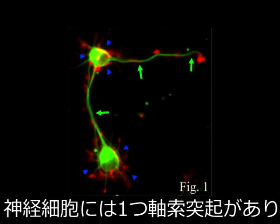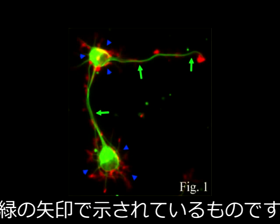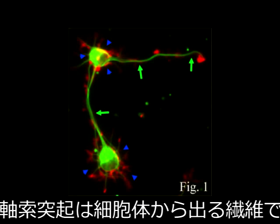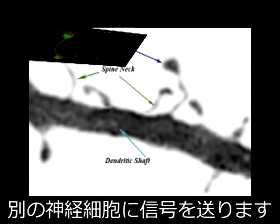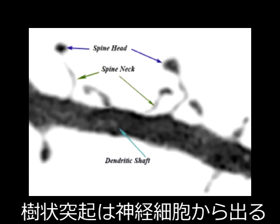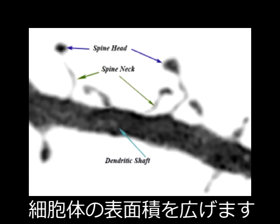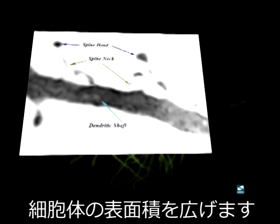What makes neurons unique are their axons and dendrites, which allow neurons to communicate with other neurons. Each neuron only has one axon, shown here by the green arrows. The axon is the elongated fiber that extends from the cell body of one neuron to another and transmits the neural signal. Dendrites are the tree-like extensions at the beginning of a neuron that help increase the surface area of the cell body.